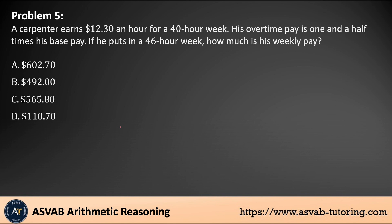Problem 5: a carpenter earns $12.30 an hour for a 40-hour week. His overtime pay is 1 and 1/2 times his base pay. He puts in a 46-hour work week. How much is his weekly pay? There are two things here — regular pay and overtime. Regular pay covers 40 hours and 6 hours is overtime. His overtime is time-and-a-half, so you multiply the base rate by 1.5 to get his overtime rate.